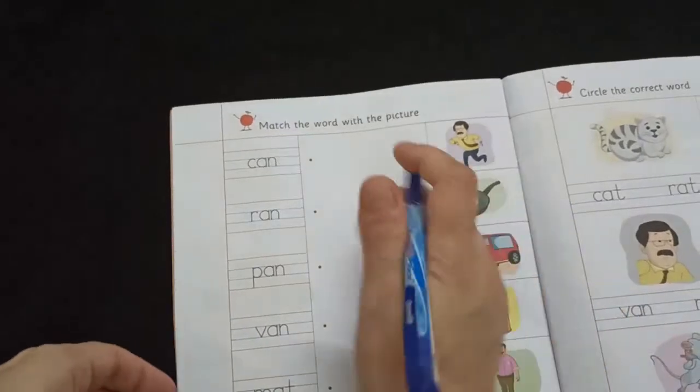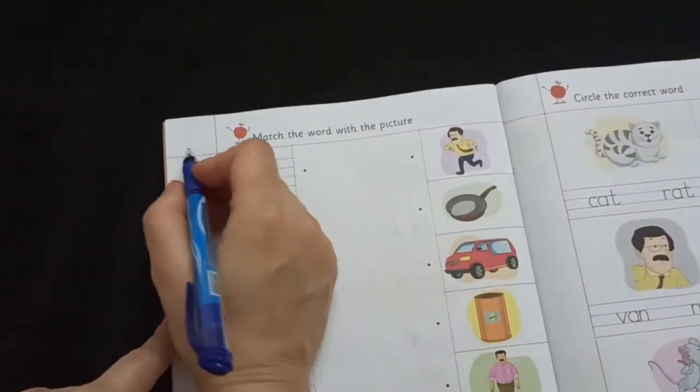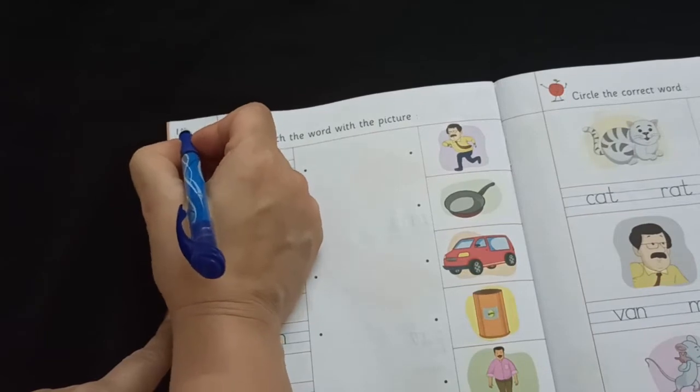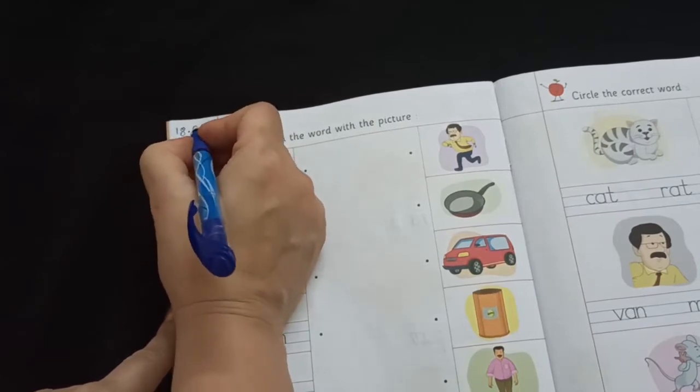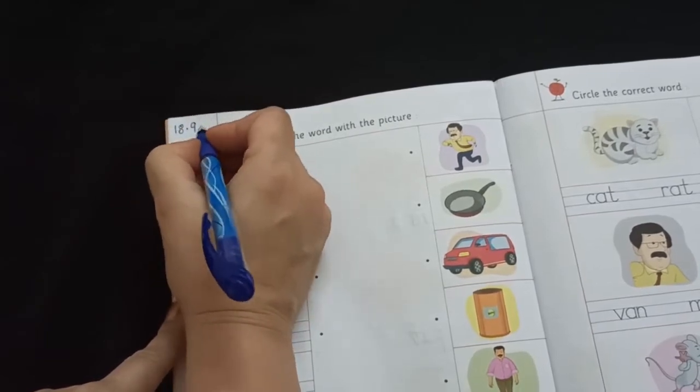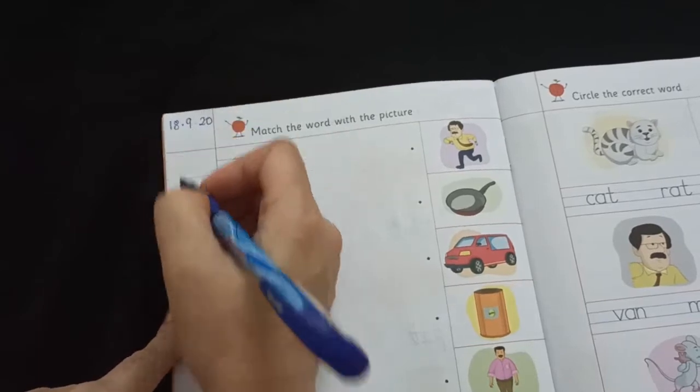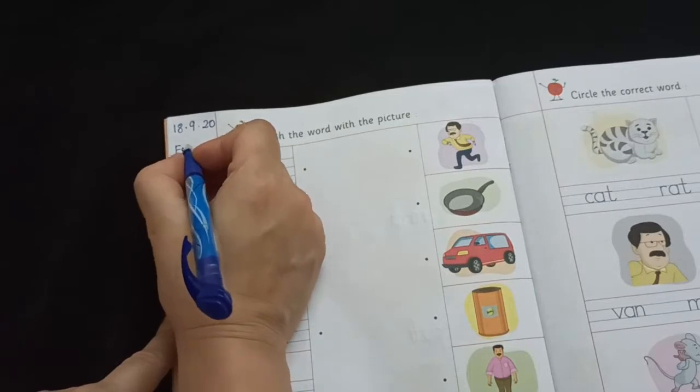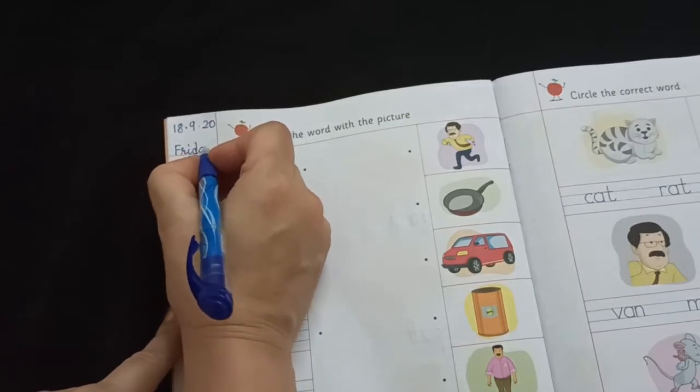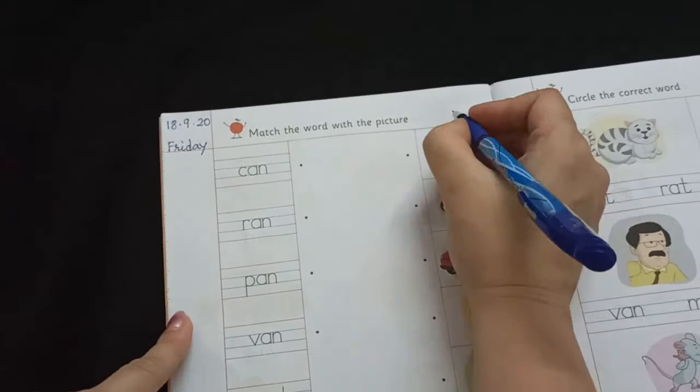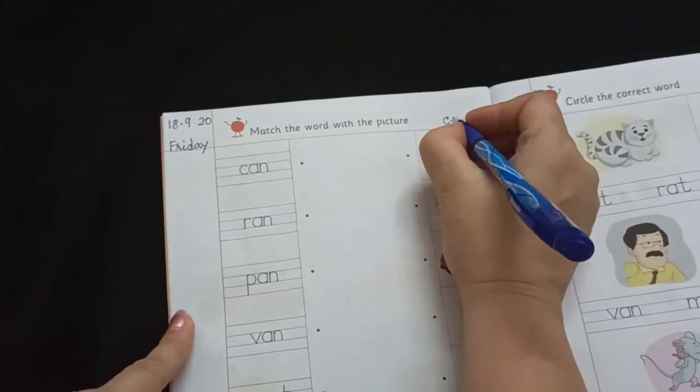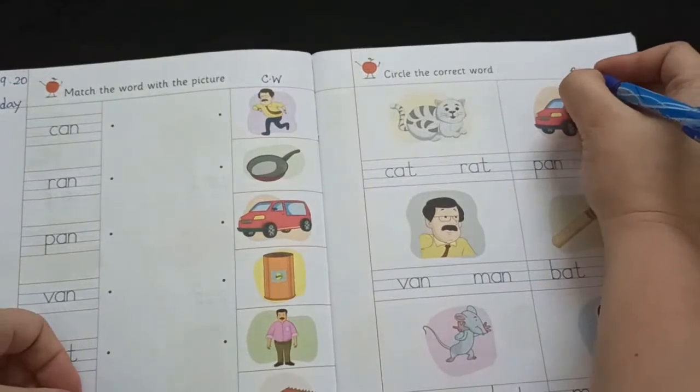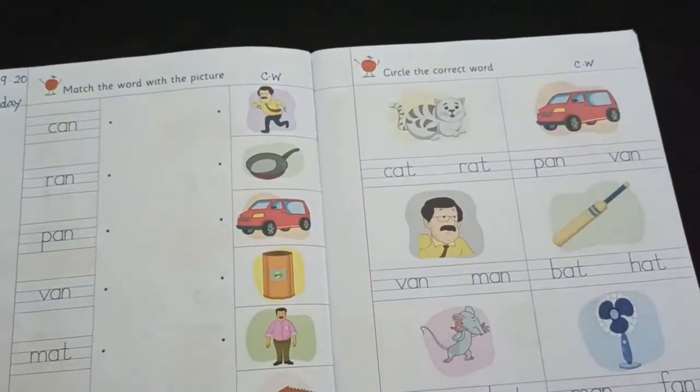So first we will write the day and date here. Today's date is 18.9.2020 and today is Friday. F-R-I-D-A-Y. Over here we will write C-W. And on this page also we will write C-W classwork.